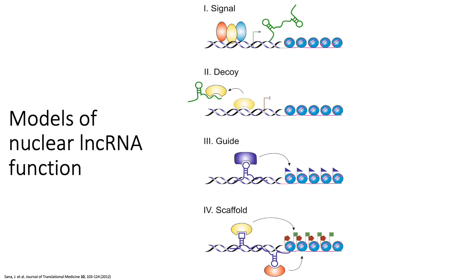LncRNAs have also been known to act as decoys — for example, transcription factors can recognize certain lncRNAs, and RNA binding proteins can also recognize lncRNAs, causing changes in gene regulation. More specifically, lncRNAs can have complementary binding sites for microRNAs, essentially soaking up microRNAs that would otherwise target the mRNA of a specific gene of interest. In this way, lncRNAs can prevent target genes from being downregulated by those microRNAs.